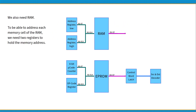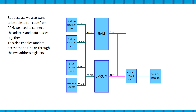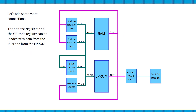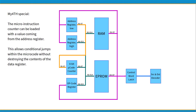We also need RAM. To address each memory cell, we need two registers to hold the memory address. Because we also want to run code from RAM, we need to connect the address and data buses together. This also enables random access to the EEPROM through the two address registers. The address registers and the opcode register can be loaded with data from the RAM and from the EEPROM. The micro-instruction counter can be loaded with a value coming from the address register, allowing conditional jumps within the microcode without destroying the contents of the data register.